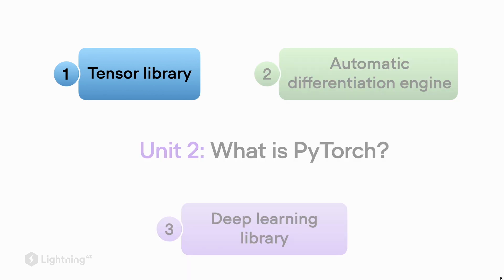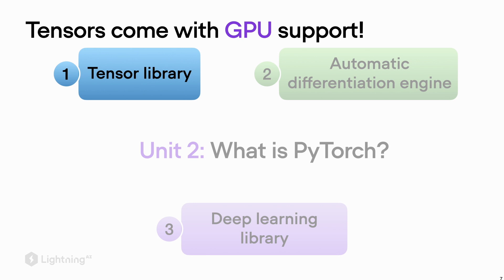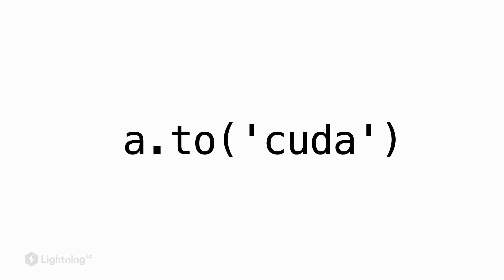One nice thing about PyTorch is that the tensors in the tensor library support GPUs — something that, for example, NumPy does not do. One of the cool features of Torch Tensor is that we can easily transfer the tensor from CPU to GPU memory, and we can do that by using the `.to()` method by providing the argument `cuda`.